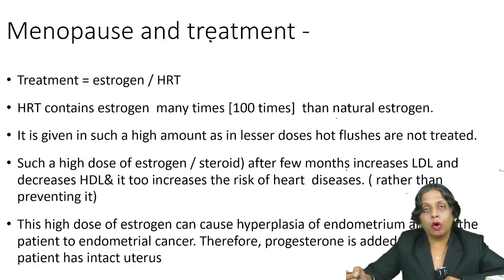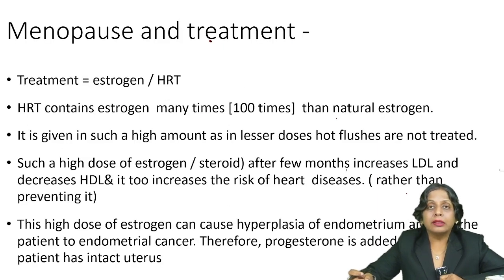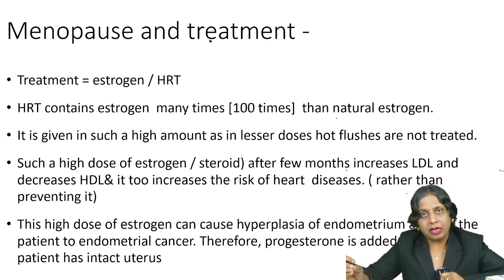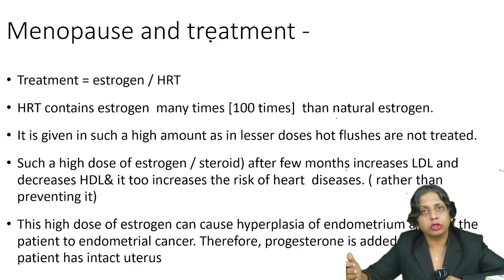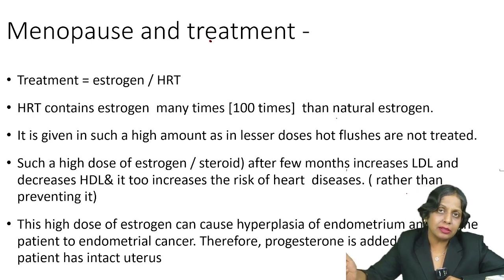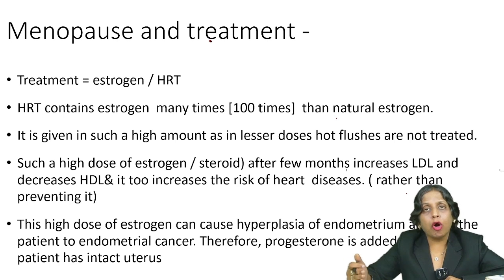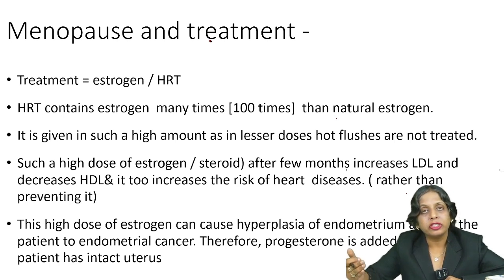In menopause, the ovaries stop functioning and stop producing estrogen, which results in osteoporosis and other menopausal symptoms. So the treatment of menopause is basically artificial estrogen, or we can say hormone replacement therapy (HRT).